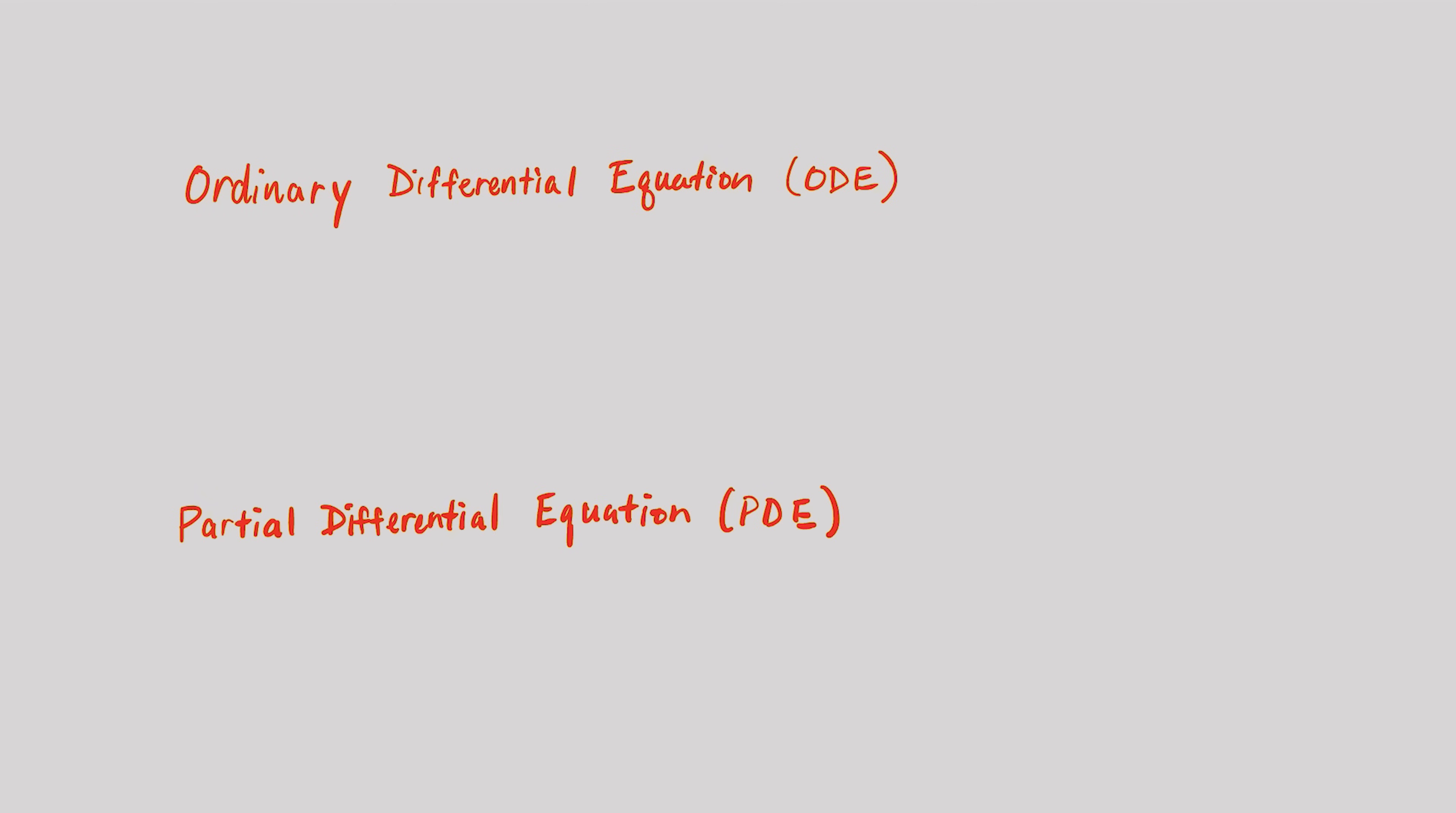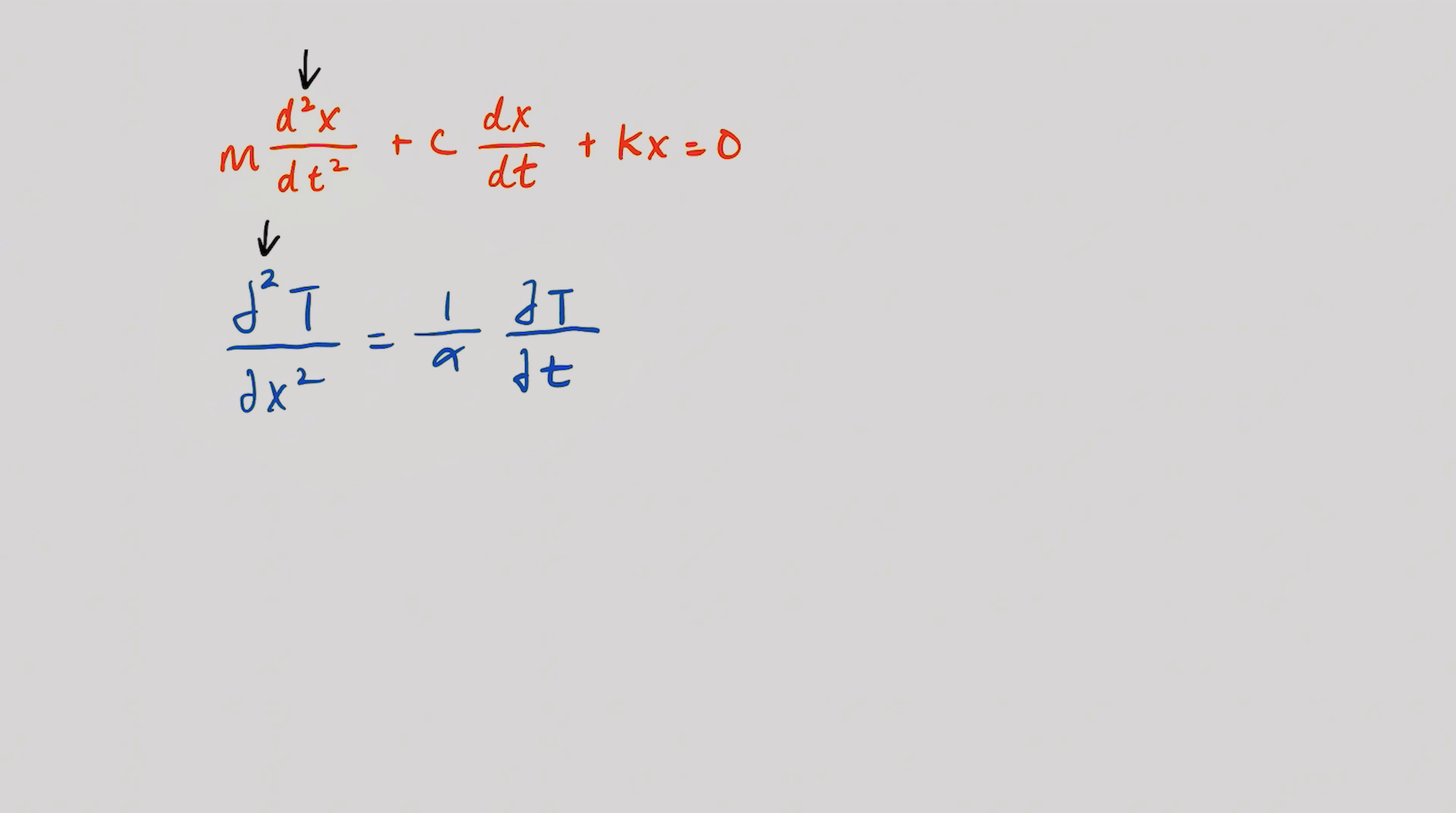Next, differential equations are essential in mechanical engineering because they allow engineers to model systems that vary across space and time, which is pretty much any real-world system. There's ordinary and partial differential equations. Ordinary means the function only depends on one variable, and partial means it depends on two or more variables. A second-order differential equation means the highest derivative in the equation is of second order. It could be either ordinary or partial. So this is a second-order ordinary differential equation for a damped spring mass system with derivatives in time only. This would be a second-order partial differential equation. Second order because it has second derivatives with respect to space, and partial because it includes derivatives with respect to two variables, space and time. In your coursework, you'll learn how to solve these equations with techniques like separation of variables, Laplace transforms, and numerical methods.